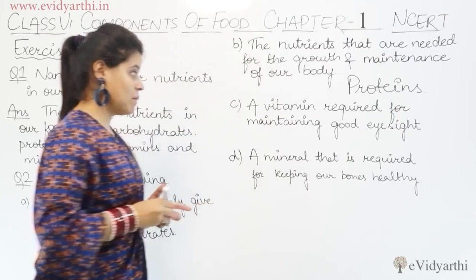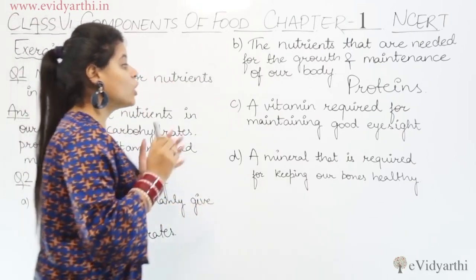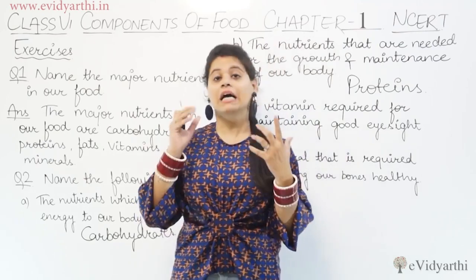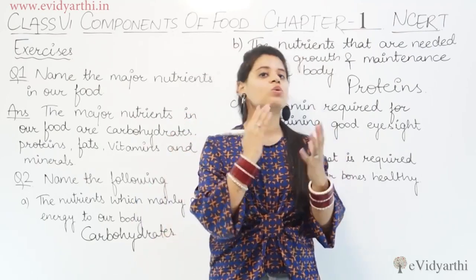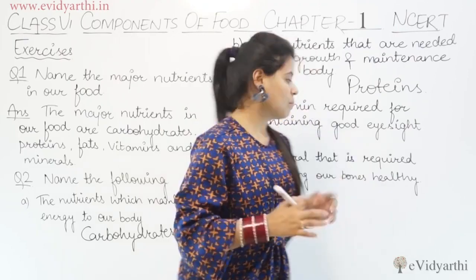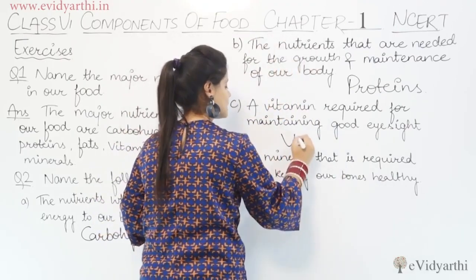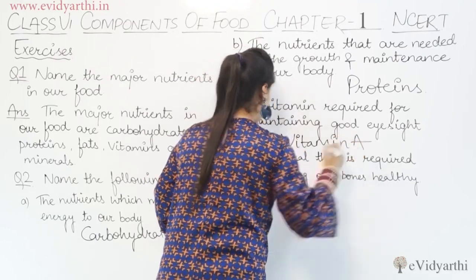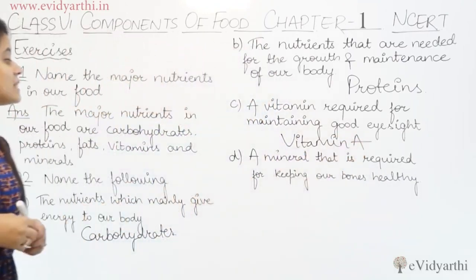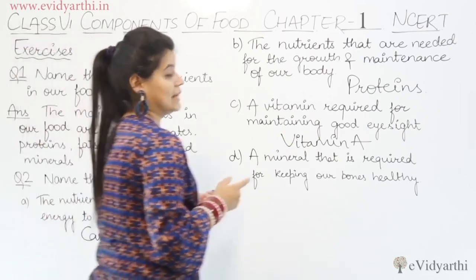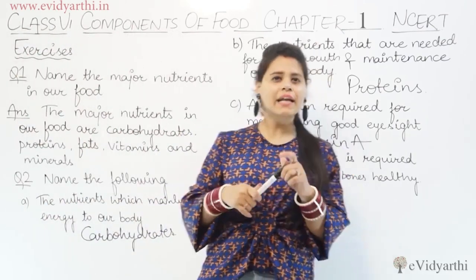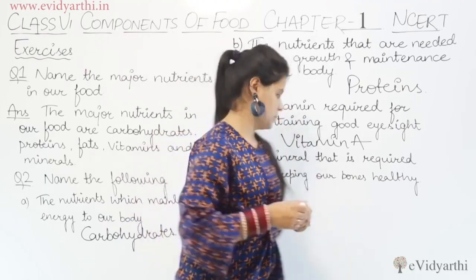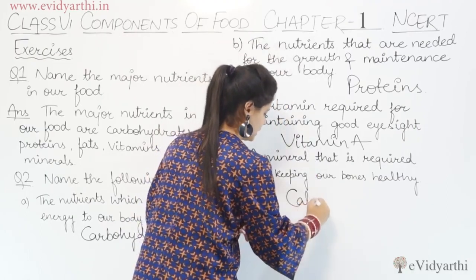The third one is: a vitamin required for maintaining good eyesight. That is vitamin A. Next is a mineral required for keeping our bones healthy. Bones need calcium — that is calcium. So we mention calcium.